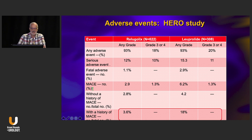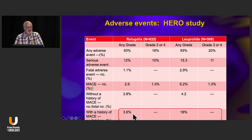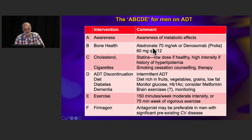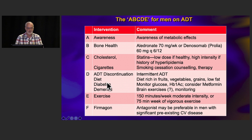One caveat: these were not grade 3 or 4 MACE events; they appear to have been fatalities, making the difference quite meaningful. To summarize — I call this the ABCDEF of ADT management: Awareness of metabolic effects, address Bone health with alendronate or denosumab, treat with statins (every patient on ADT should be on statins), Smoking cessation, intermittent hormone therapy to reduce impact, Diet and Diabetes management with metformin, Exercise, and for pre-existing cardiovascular disease consider an LHRH antagonist — either the monthly injection or perhaps the oral agent going forward. Thank you.